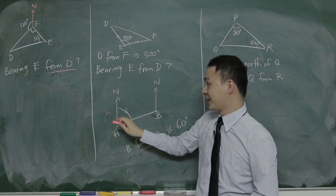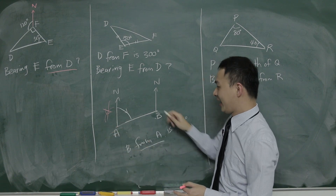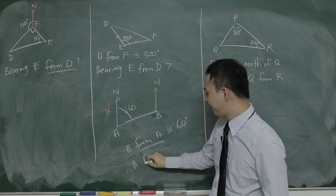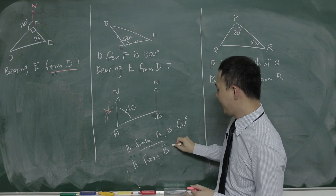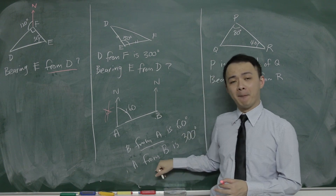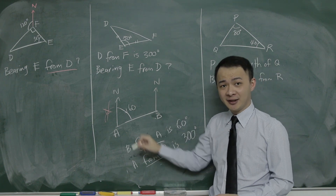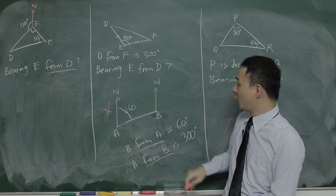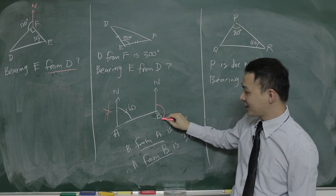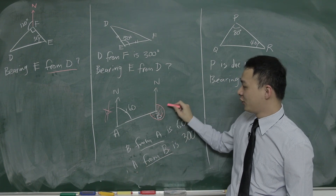Start from the north and rotate clockwise — that's the wrong direction if you go anti-clockwise. Continue clockwise until you touch line AB, then that angle is 60 degrees. Same idea: if bearing A from B is 300 degrees, then 'from B' means the angle must be at B. From the north at B, rotate clockwise until I touch line AB — so the whole angle here will be 300 degrees.